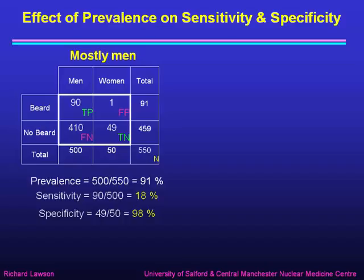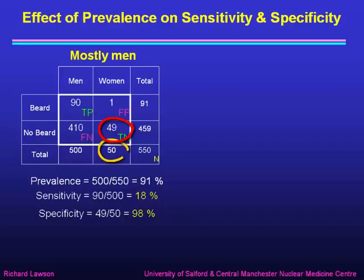Now let's see what happens when we change the prevalence. Here I've got the same group of mostly men — our football crowd that we looked at before — where the prevalence of men is 91%. The sensitivity is going to be 90 true positives as a fraction of the column total of 500, which is 18%. And the specificity is going to be 49 true negatives as a fraction of the column total of 50 — that's 49 out of 50, which is 98%.